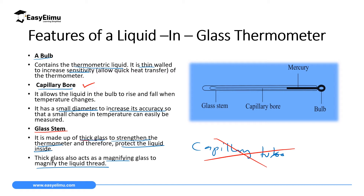So this is how a common thermometer looks like, and those are its features. We have a bulb, which is very thin to increase sensitivity. We have a capillary bore with a small diameter to increase accuracy by minimizing the meniscus formed, and it gives room for the rise and fall of thermometric liquid when temperature changes. We also have a glass stem which is thick to strengthen the thermometer, protect the liquid inside, and to magnify the liquid thread.